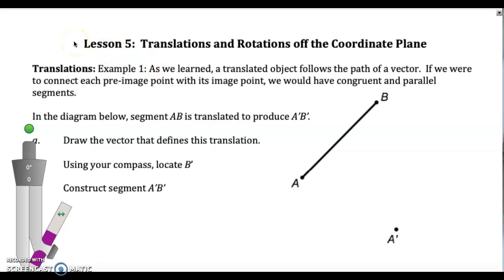So in this first example here, you can see that we have line AB. As we learned, a translated object follows the path of a vector. If we were to connect each pre-image point with its image point, we would have congruent and parallel segments. So in this diagram, segment AB is translated to produce A'B', and they've helped us out — they've already drawn A'. The next problem we do, it's not going to be drawn; we're going to have to draw the first point ourselves.